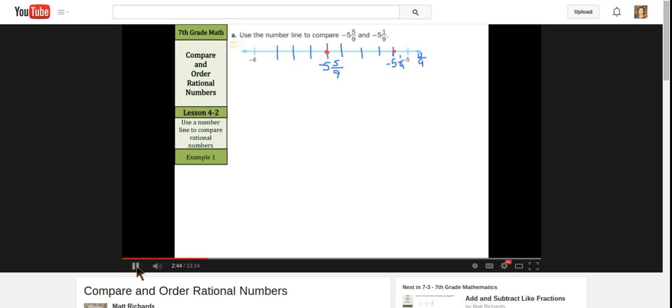If I want to compare the two, 0 is somewhere out here. If we were to continue this number line, 0 is somewhere out there. And the further you are to the left away from 0, the smaller you are. So negative 5 and 5 ninths is going to be less than negative 5 and 1 ninths.